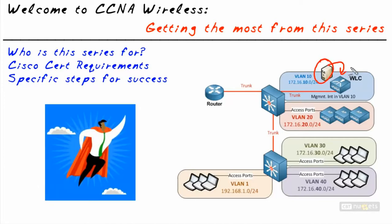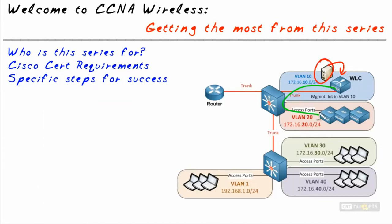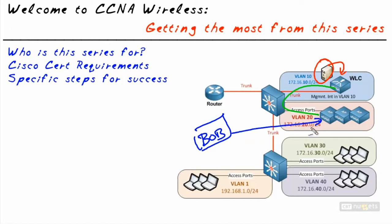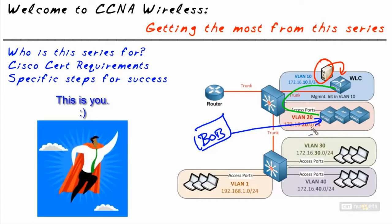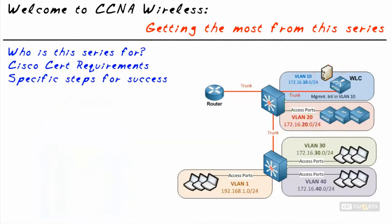Is it the AAA server not talking to the controller? Is it an issue with the CAPWAP tunnel between the access points and the controller? Is it the client — for example, Bob, whose wireless profile is doing the wrong type of authentication as he's trying to connect to the wireless network? Because you'll understand those components and how they interact with each other, your value to the company and the customers you serve will go up.